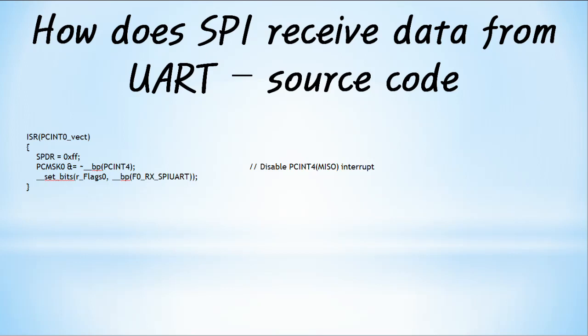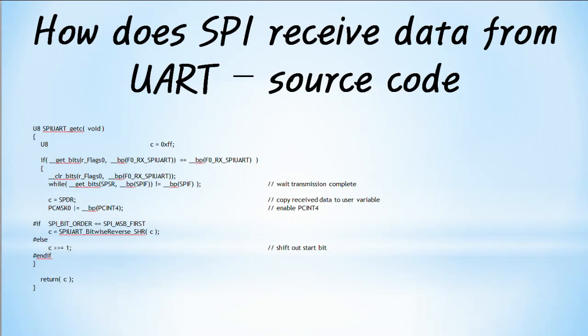PCMSK0 &= ~_BV(PCINT4) disables the PCINT that detects the start bit, so no interrupt occurs on the incoming signal after the start bit. __set_bits(R_flag0, __BV(F0_RX_SPI_UART)) detects the start bit and indicates that sampling of the MISO pin signal has begun. When the F0_RX_SPI_UART flag is set, it means the start bit is detected and sampling has started. Wait until all eight data bits input to MISO have been received. Copy the SPI receive register value to the user variable. If using MSB first SPI, call SPI_UART_bitwise_reverse_SHR, then enable PCINT4 again. Shift right by 1 to discard the start bit and store the result in the user variable.